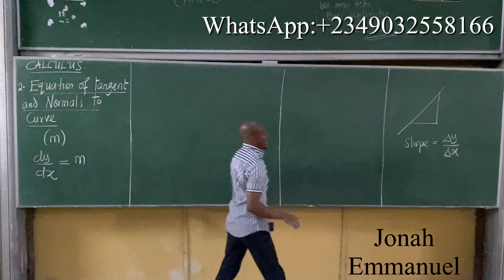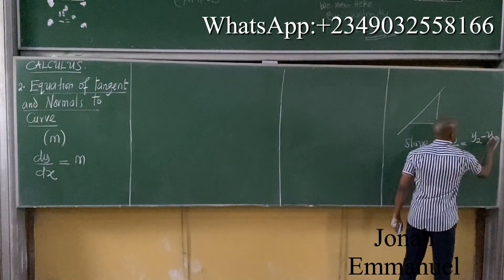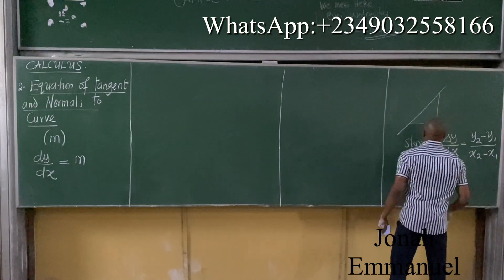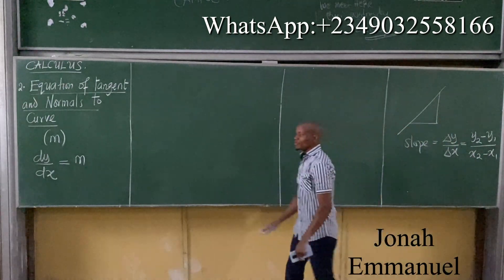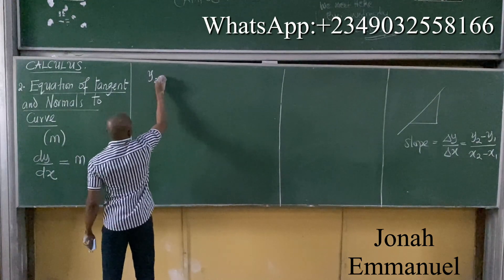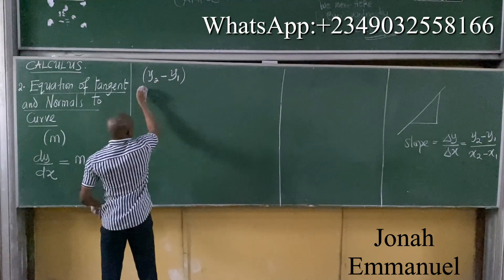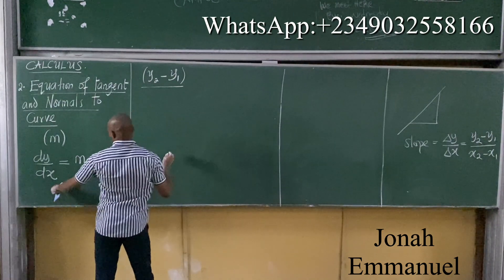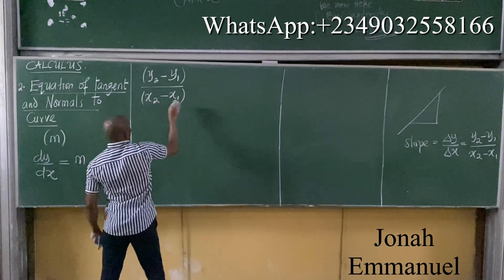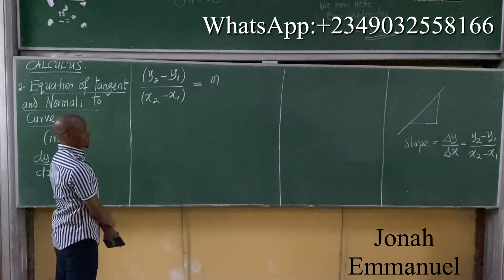What is change in Y? This expression equals Y2 minus Y1, all over X2 minus X1, and that equals M. The same concept applies here — this becomes Y2 minus Y1 over X2 minus X1, equal to M.